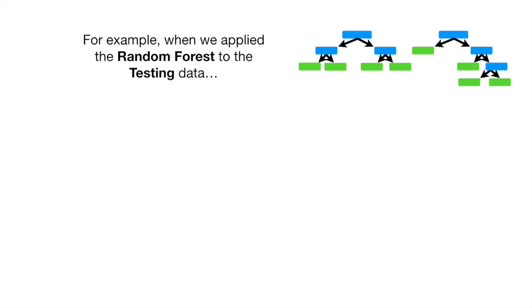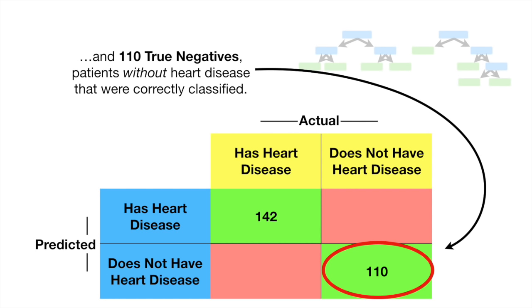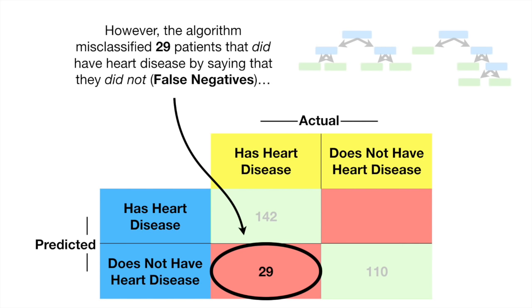For example, when we applied the random forest to the testing data, there were 142 true positives, patients with heart disease that were correctly classified, and 110 true negatives, patients without heart disease that were correctly classified. However, the algorithm misclassified 29 patients that did have heart disease by saying they did not. These are false negatives.